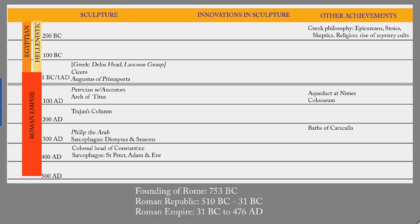Looking at dates: the legendary founding of the city of Rome was in 753 BC. Roman civilization lasted until 476 AD, at which point Odoacer and his Germans invaded Rome and deposed Romulus Augustulus, the last emperor who ruled in the western part of the Roman Empire. Within those dates, the Roman Republic lasted from 510 BC to 31 BC, at which point Octavian Augustus became the first emperor. The Roman Empire lasted from 31 BC to 476 AD.